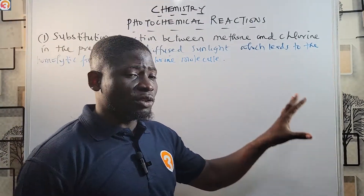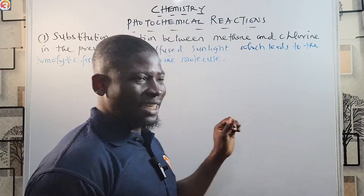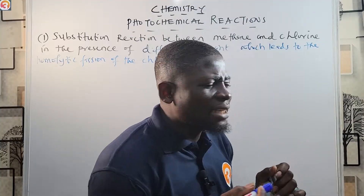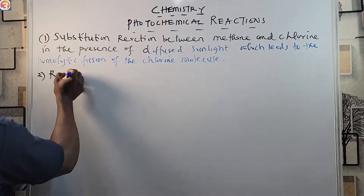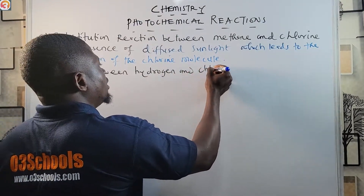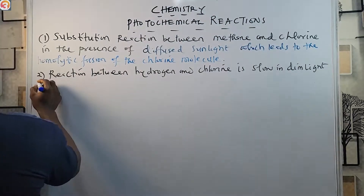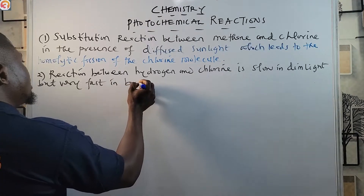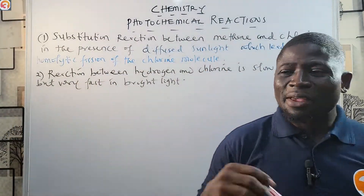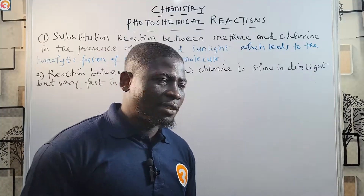So this substitution reaction between methane and chlorine, with diffuse sunlight, leads to the homolytic fission of the chlorine molecule. When we get to organic chemistry, we will see it again. Also, the reaction between hydrogen and chlorine is very slow in dim light, but very fast in bright light — this is also an example of a photochemical reaction because it is affected by light.